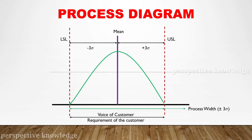Next, the process diagram. The process diagram is the bell curve. The curve drops between the lower specification limit and the upper specification limit. The center of the curve is the mean value.